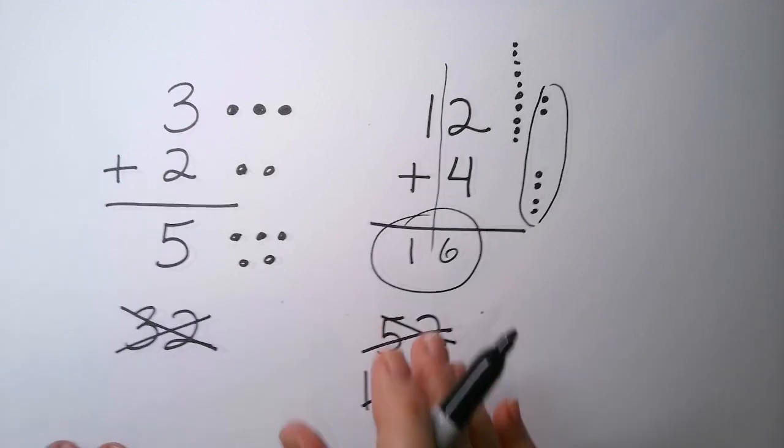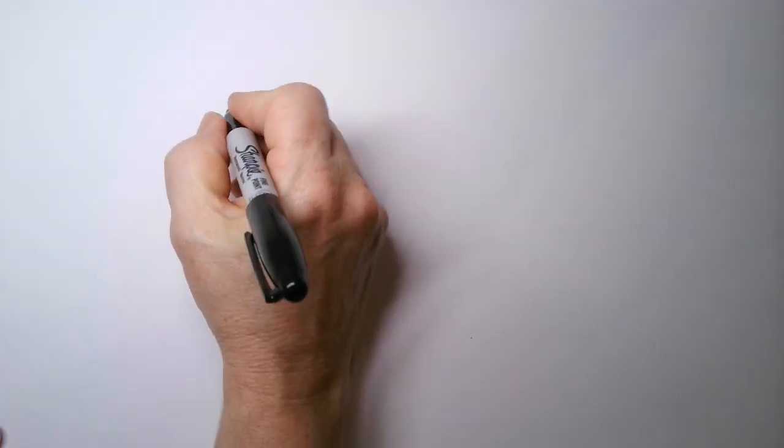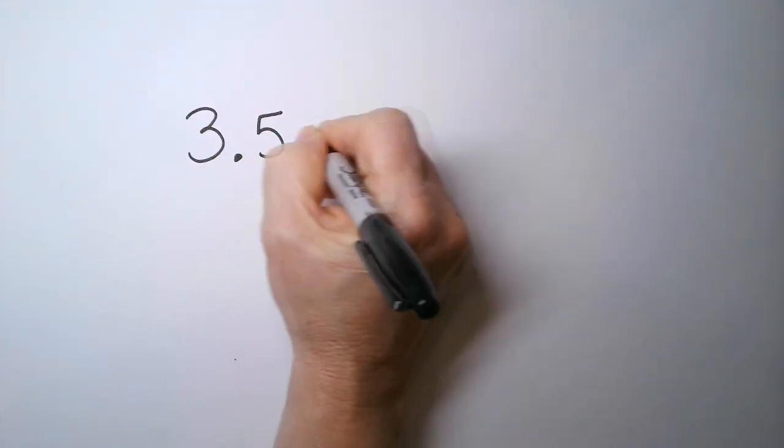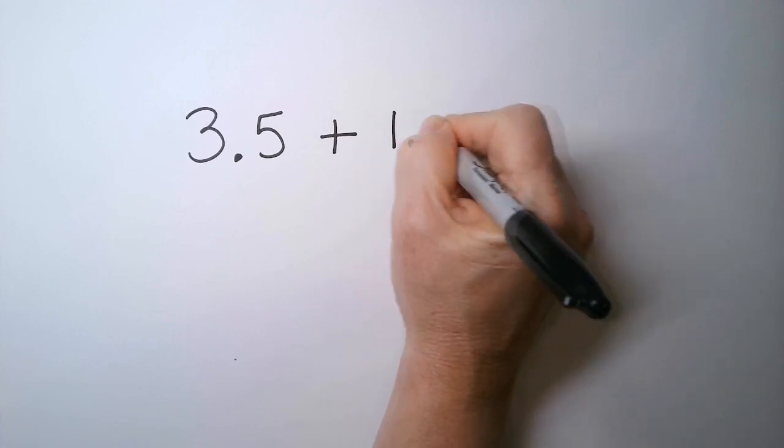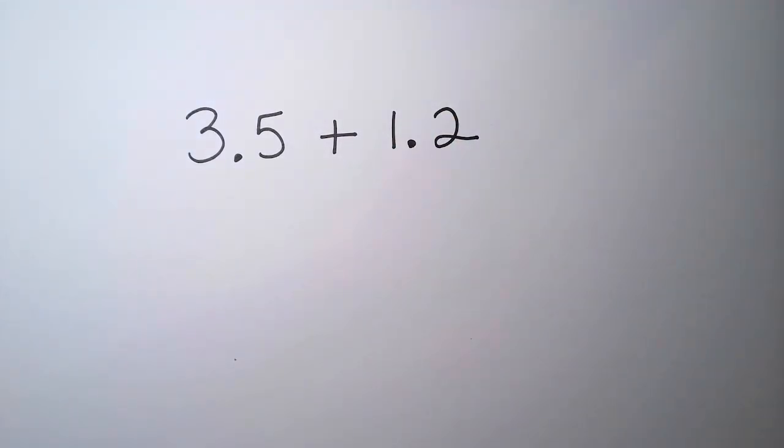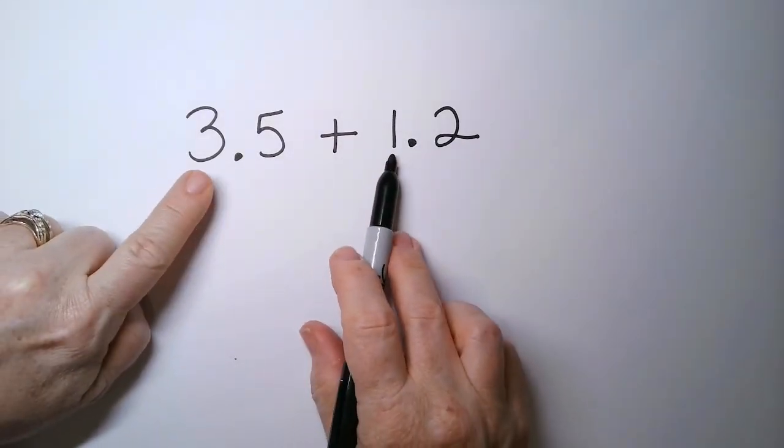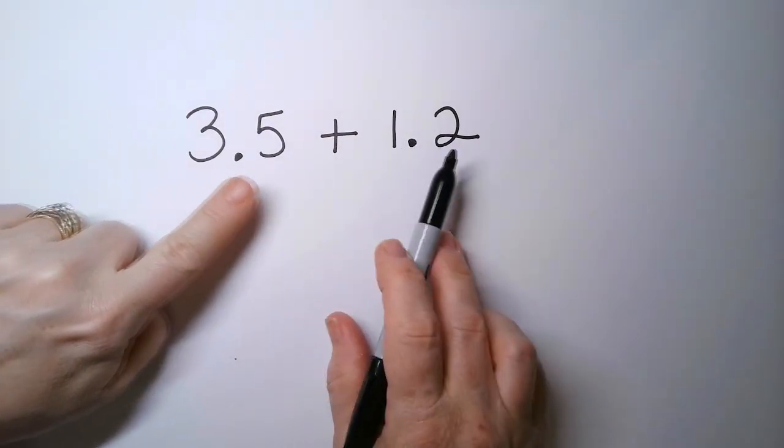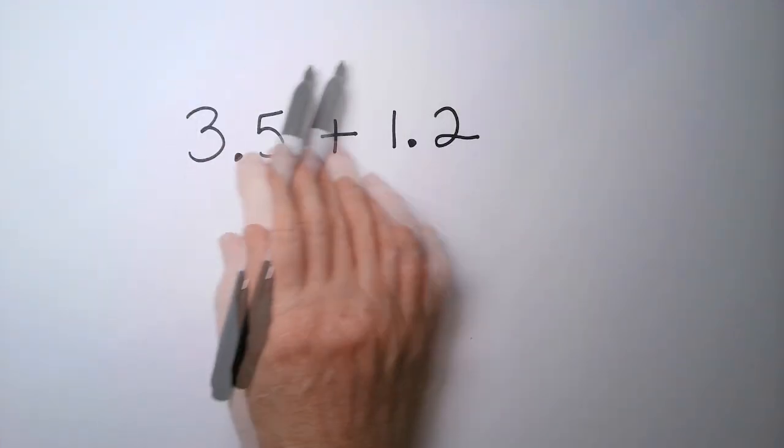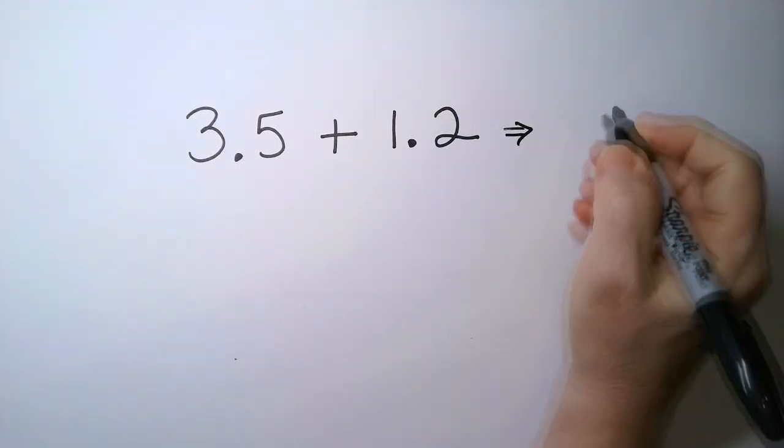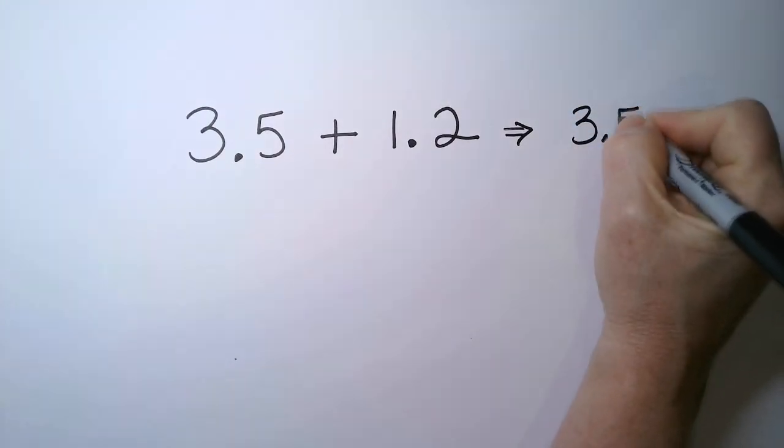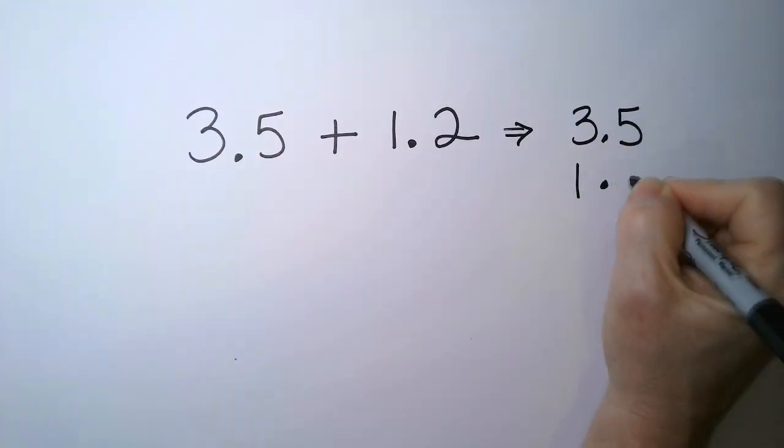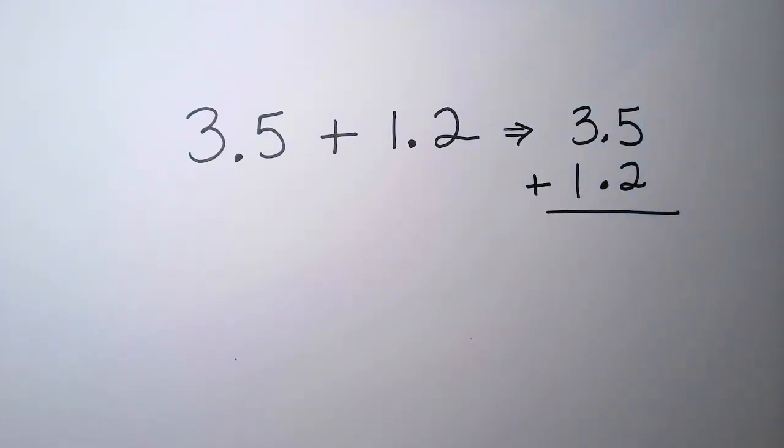So we're going to use these ideas when we add decimals. Suppose I add 3.5 plus 1.2. So I need to add the same place values together. So I'm going to add the 3 and the 1, and then separately I'll add the 5 and the 2. And it's helpful when you first start doing decimals to write it vertically. And what we do is we line up the decimal point like this. And then everybody stays in their own lane as you add numbers together.